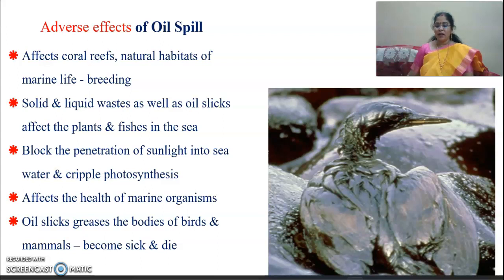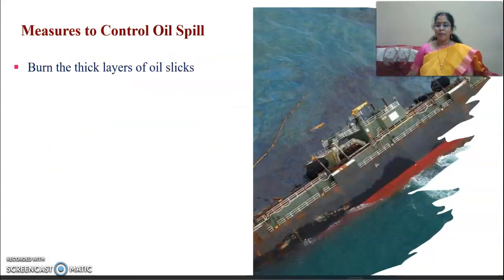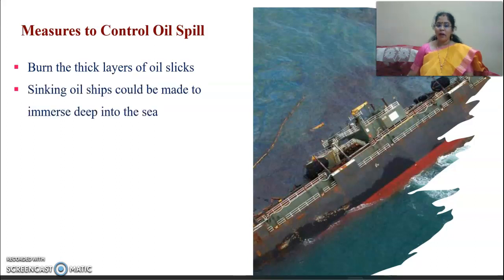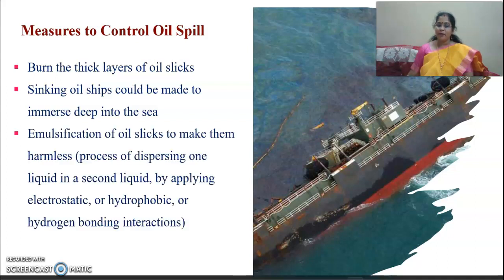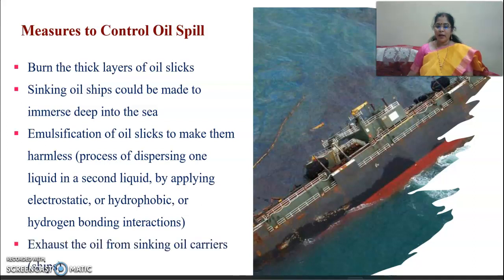Control measures for oil spills include: burning the thick layer of oil; sinking oil ships and making them immerse deep into the sea; and emulsification of oil slick by dispersing one liquid into another — that is, mixing water, oil, and other chemicals using electrostatic, hydrophobic, or hydrogen bonding interactions. Another measure is to exhaust the oil from sinking oil carriers or ships.